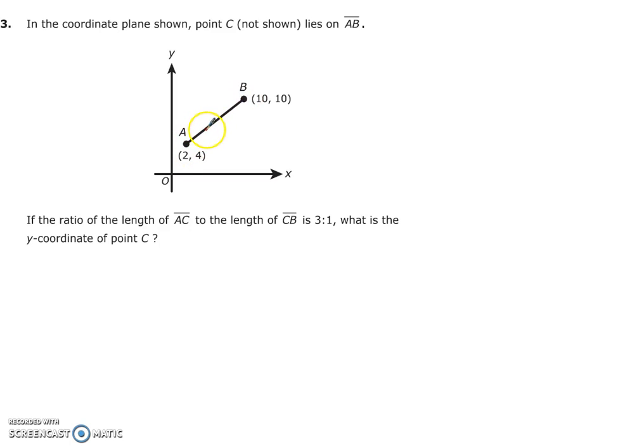So C lies somewhere here in between these two points A and B. If the ratio of the length of AC to the length of CB is 3 is to 1, this ratio here is 3 is to 1. So that's our A and this is our B. Label your ratio as A and B. So we know that this line segment is going to be divided to a total of 4 parts.